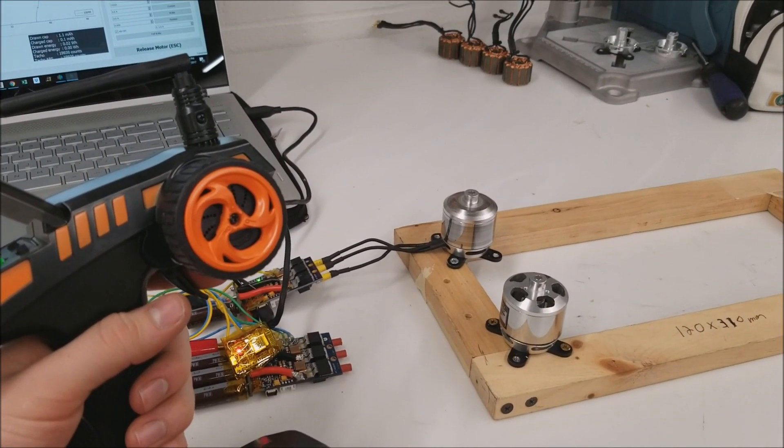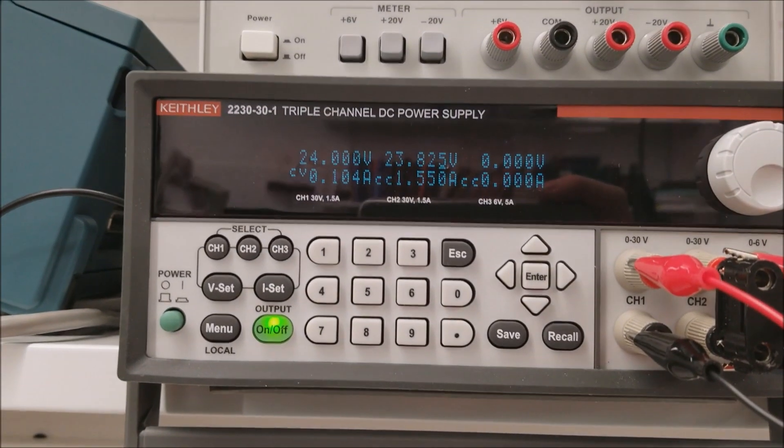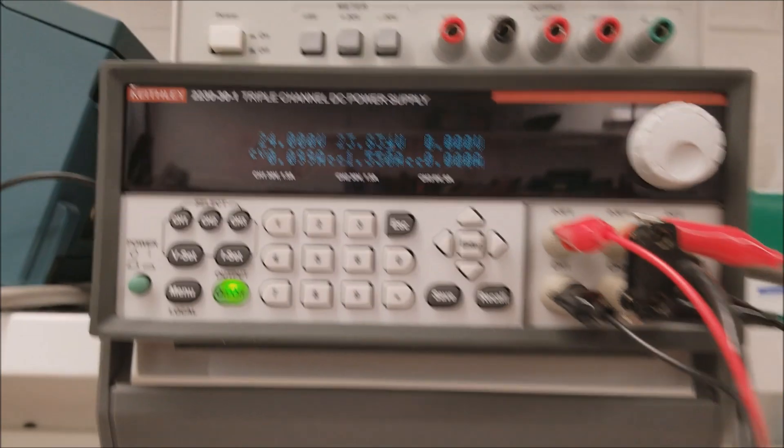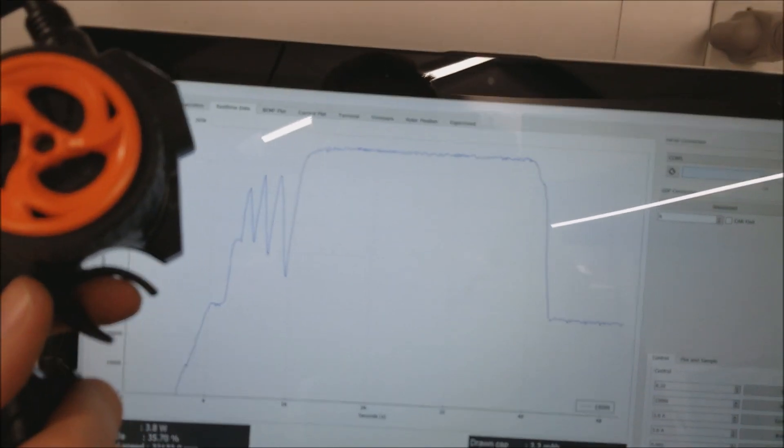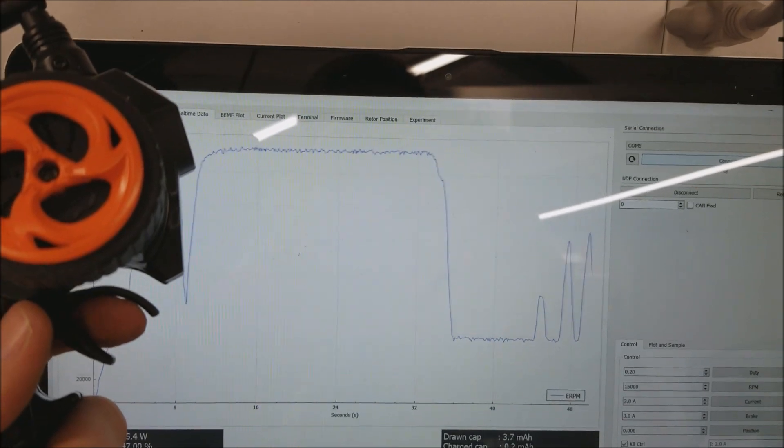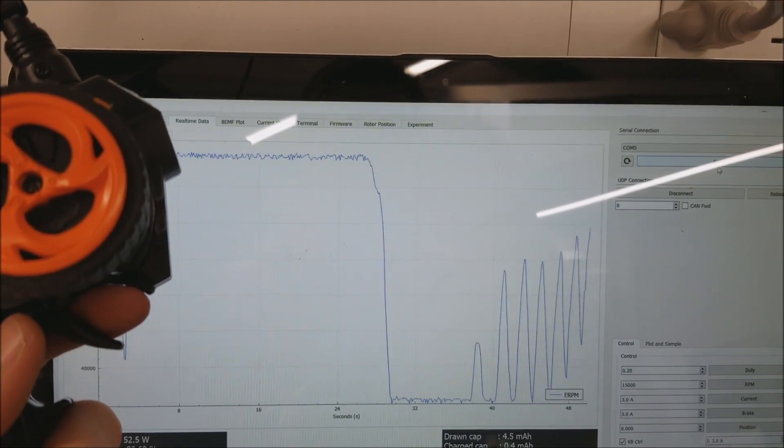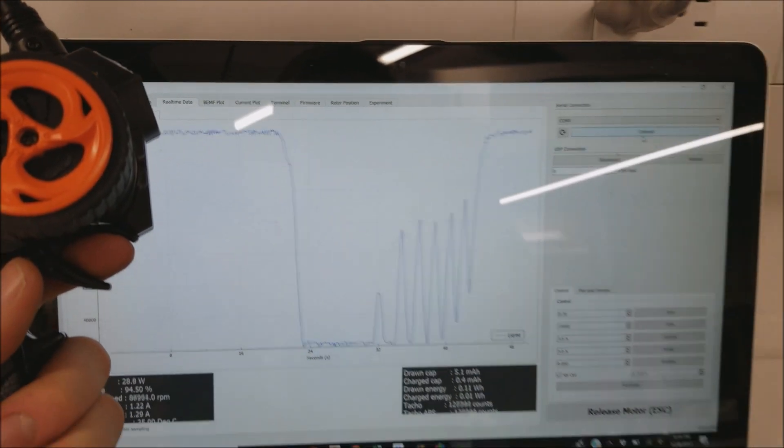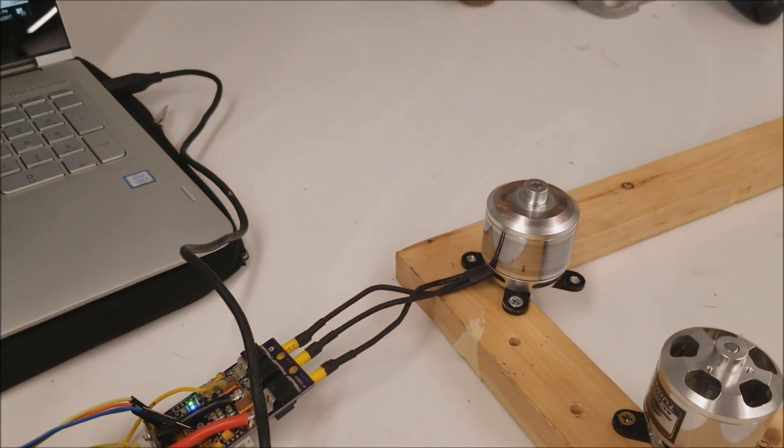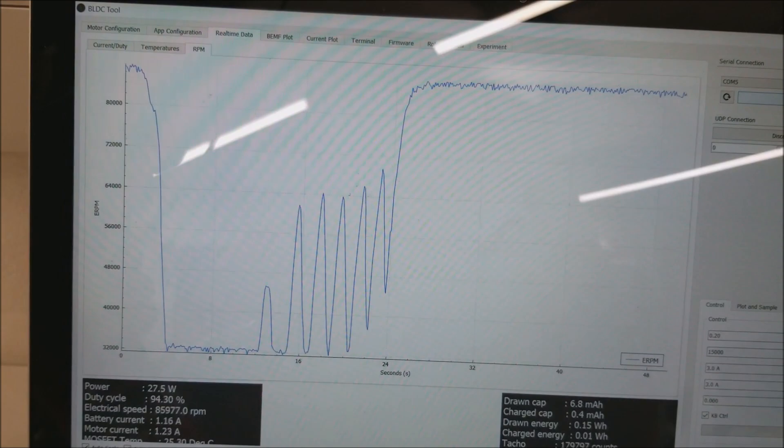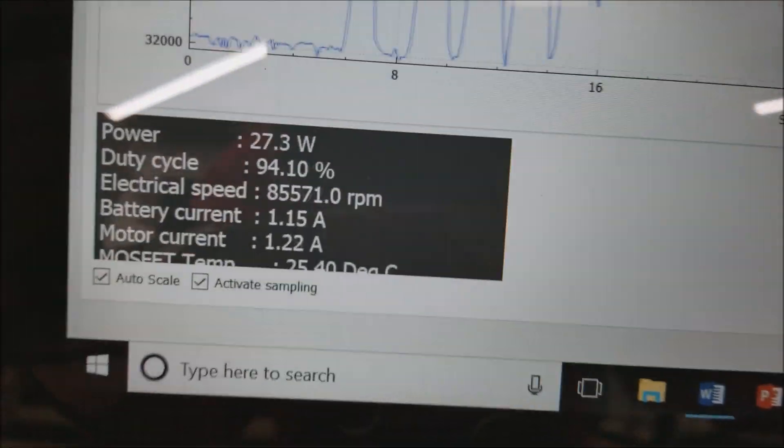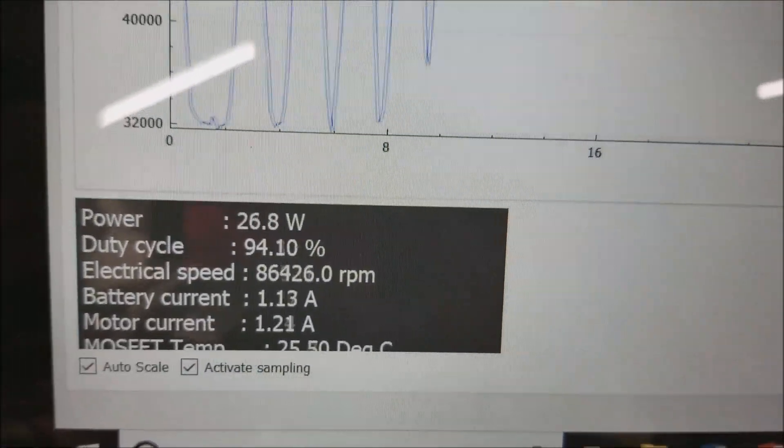You can see it's spinning up. At full current, at full load, I'm only drawing about 2 amps, a little under 2 amps. And here you can see, as I change the throttle, what my RPM looks like. At full throttle, my RPM is 86,000 RPM.